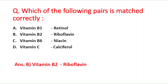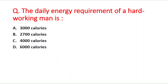Next question: the daily energy requirement for a hard-working man is — option A is 3000 calories, B is 2700 calories, C is 4000 calories, and D is 6000 calories. The right answer is option C — 4000 calories.